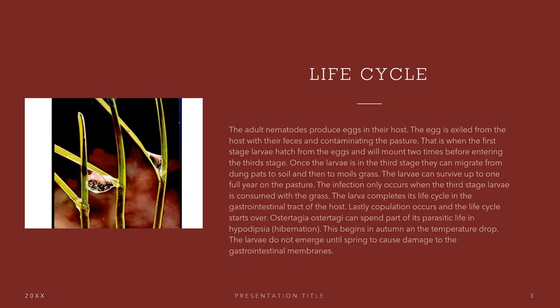Now let's speak about the life cycle of this parasite. The adult nematodes produce eggs in their host. The eggs are excreted from the host with their feces and contaminate the pasture. The first stage larvae hatch from the eggs and molt twice before entering the third stage. Once in the third stage, they can migrate from dung pads to soil and then to moist grass. The larvae can survive up to a full year on the pasture. Infection only occurs when the third stage larvae are consumed with the grass, completing the life cycle in the gastrointestinal tract of the host. Lastly, copulation occurs and the life cycle starts over.